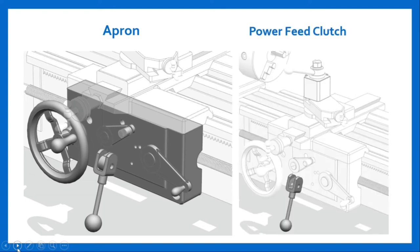The second component is the power feed clutch. The power feed clutch is located between the feed rod and the apron drive train. It is only used when feeding using the feed rod to power either the carriage feed or the cross slide. It is not used for threading operations — for threading, the half nut lever is used.